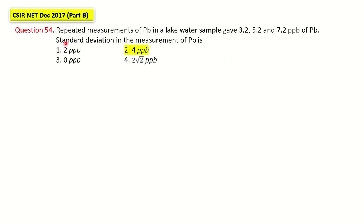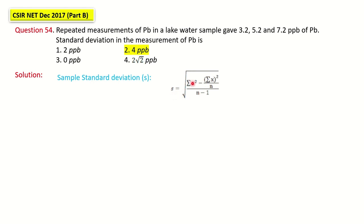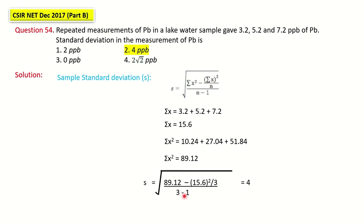We will now see a question from CSIR UGC NET December 2017, Part B, question number 54. Repeated measurements of lead in a lake water sample are given, and they are asking you to calculate the standard deviation. Four options are provided. Using the same formula — s equals square root of [summation of x squared minus (sum of x) squared divided by n], all divided by n minus 1 — find the sum of x and sum of x squared, substitute into the formula, and you get the standard deviation as 4 ppb (parts per billion). Option 2 is correct.